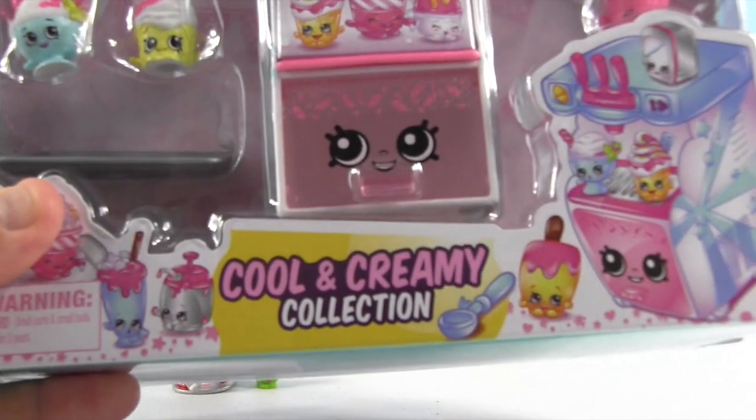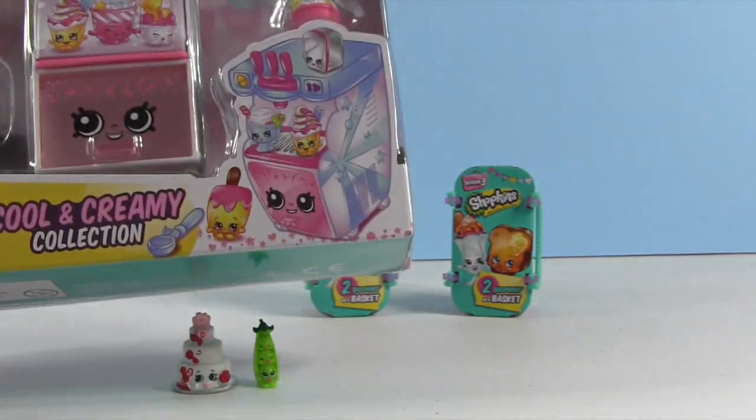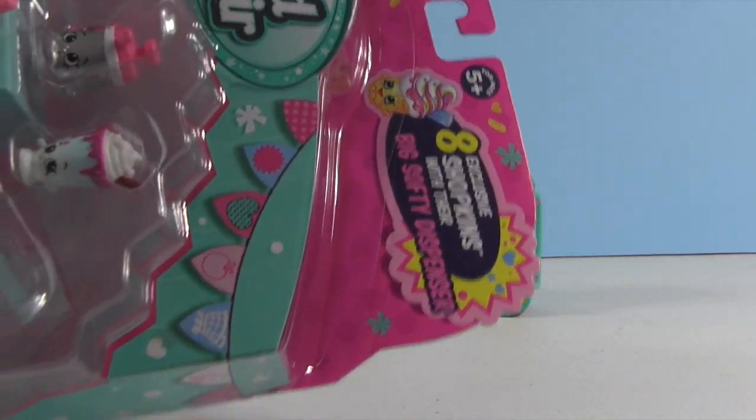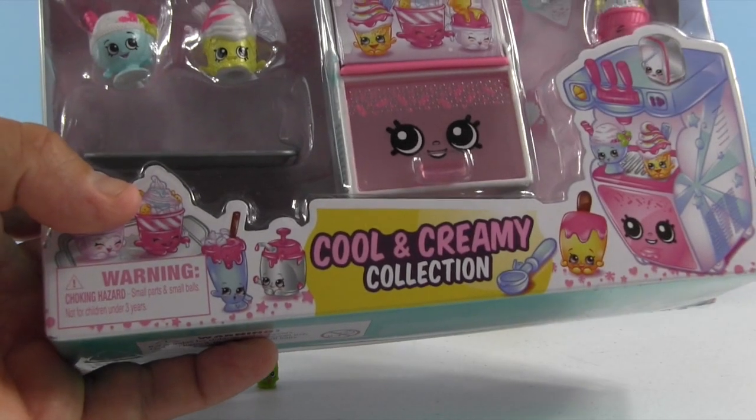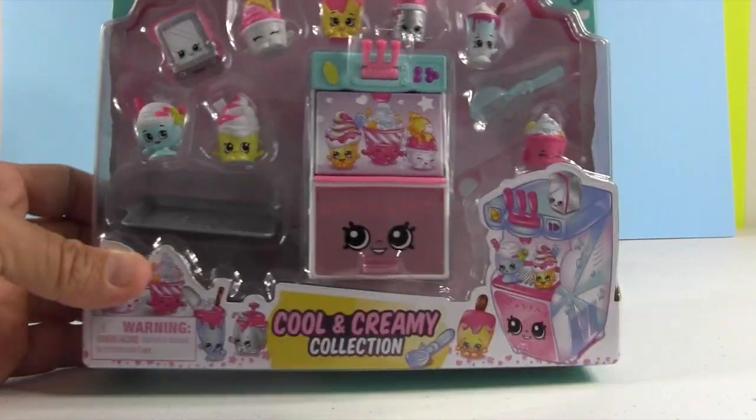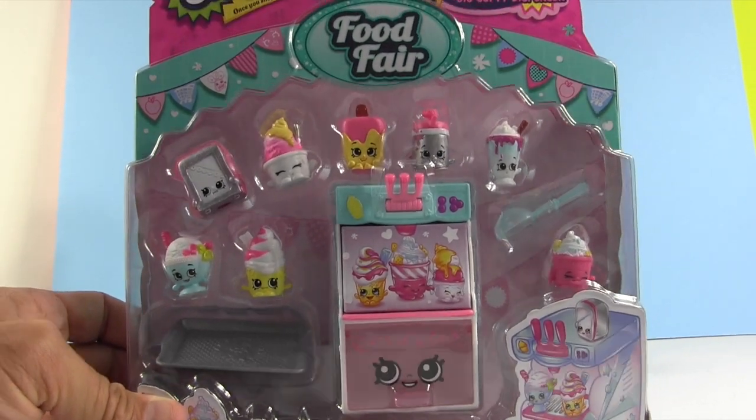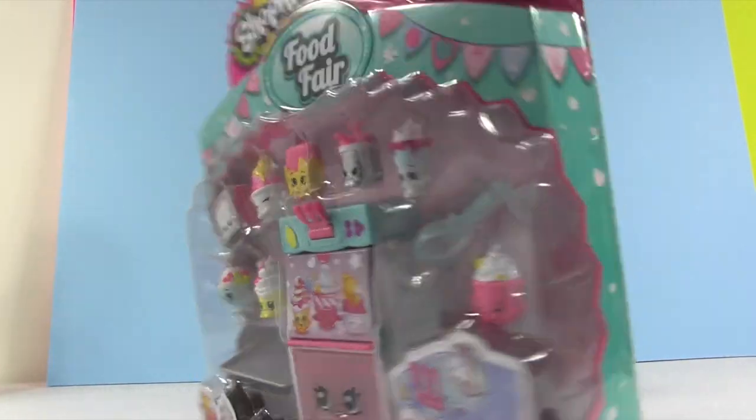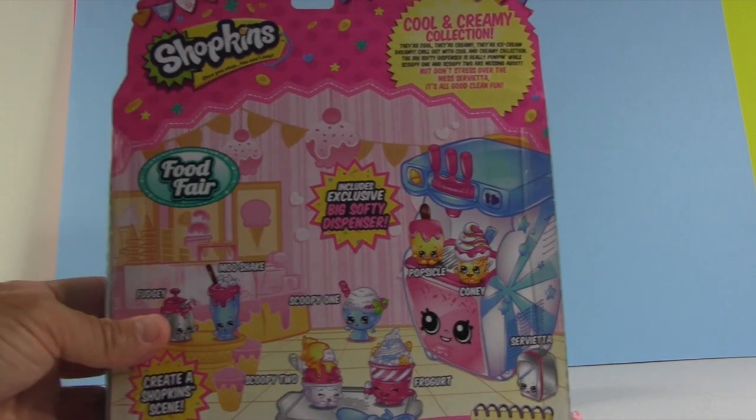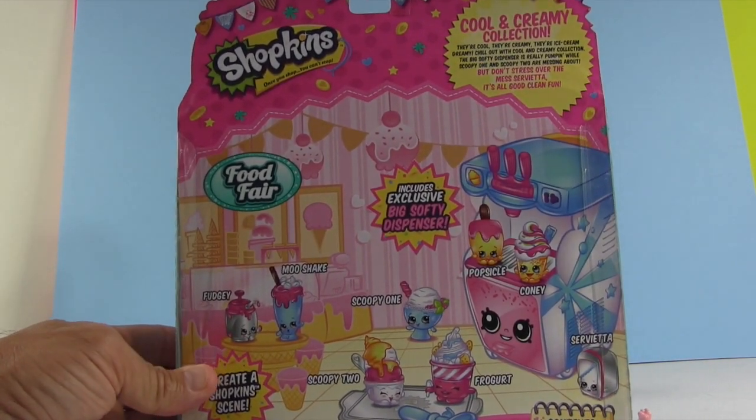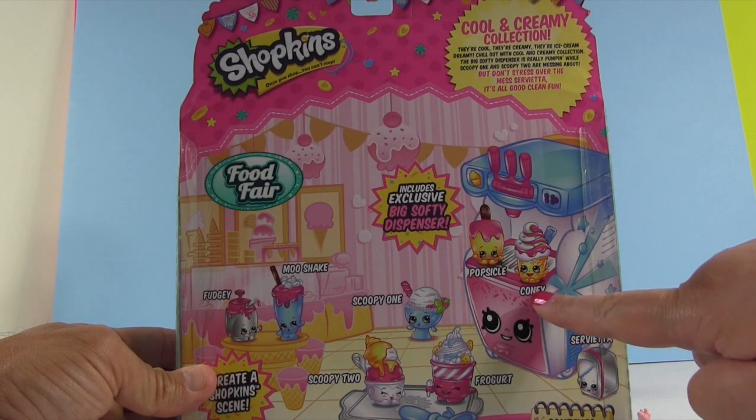Alright, now on to the cool and creamy collection from the food fair with the big softy dispenser. Let's do this. Let me show you the other background, part of it. This is the packaging, here's the back. Shopkins down. See, where is he? Coney.